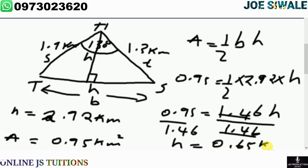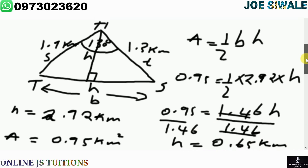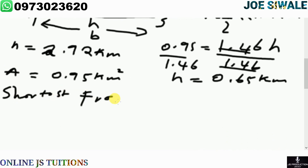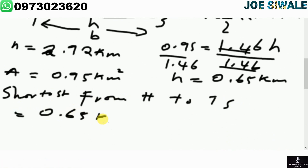So the shortest distance from H to TS is equal to 0.65 kilometers. That is how you find the shortest distance. If you have questions, please ask in the group. Thank you.